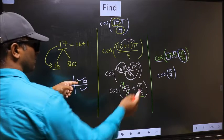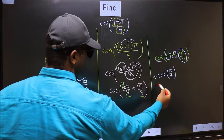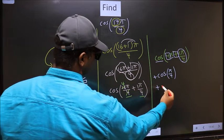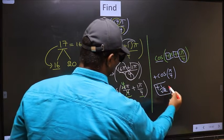And in the first quadrant, cos is positive. So you should put plus. So plus cos pi by 4 is 1 by root 2. This is our answer.